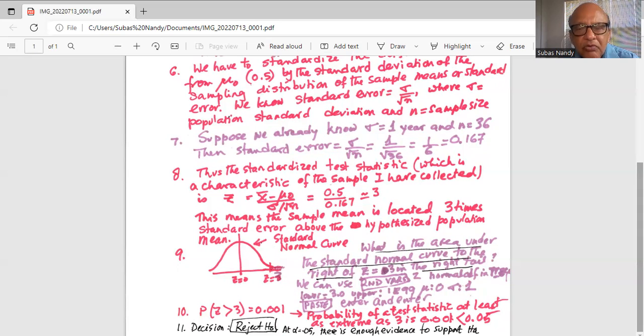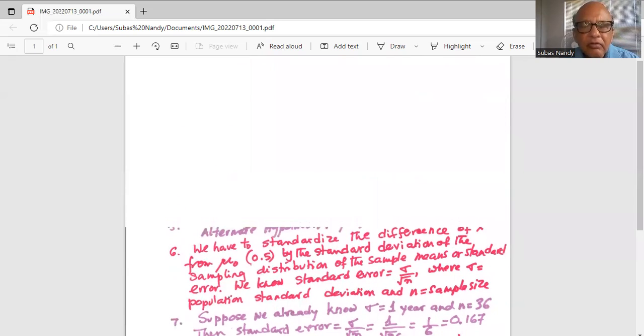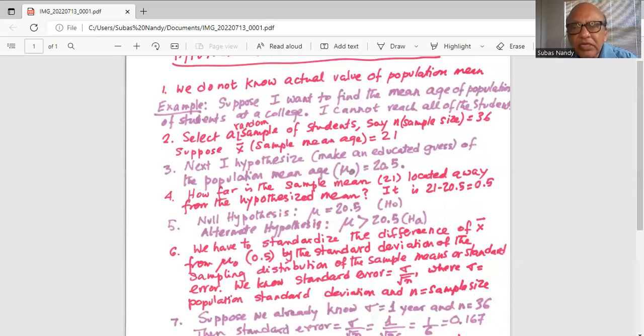Which remember mu is greater than 20.5. So we are rejecting the null hypothesis because the probability of getting a test statistic as extreme as what we have obtained is very small, 0.001, which is less than the level of significance, 0.05.